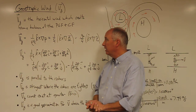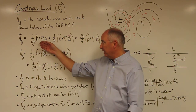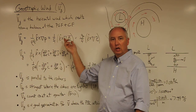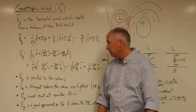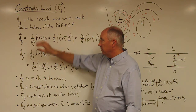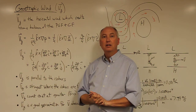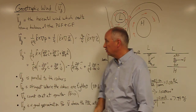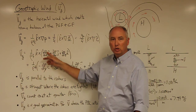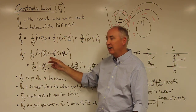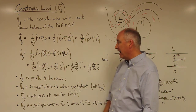We have three ways to describe the magnitude and direction of the geostrophic wind. All we need to know is either the pressure gradient, the gradient of the geopotential, or the gradient of the geopotential height. This notation needs to be expanded into its components. Remember that the gradient of pressure is: partial p over partial x in the i-hat direction, plus partial p over partial y in the j-hat direction, plus partial p over partial z in the k-hat direction.